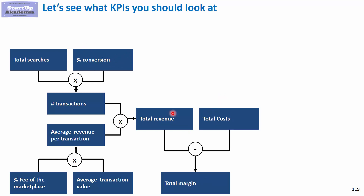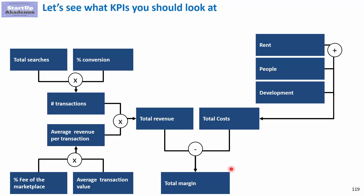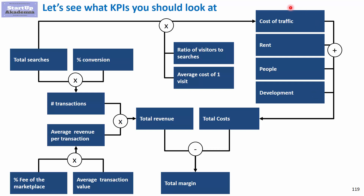On the cost side, once we have total revenue and total cost we can calculate total margin. Costs include development, people, and rent — as discussed previously. You can go deeper into those, but they are not as significant as the cost of traffic: getting people to actually come and search on your marketplace.